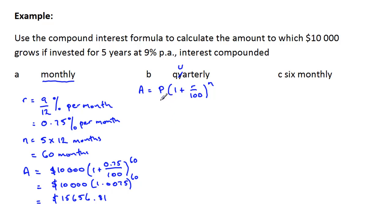What about quarterly? Well, for this one I'll put B here. Quarterly, the thing about quarterly is that R would be our interest rate 9% divided by how many quarters there are in a year, in this case four. So that's now our quarterly interest rate, so R is 9/4% per quarter. Now we can go ahead and work this out as a decimal, 9 divided by 4 is 2.25% interest per quarter.